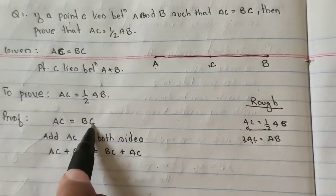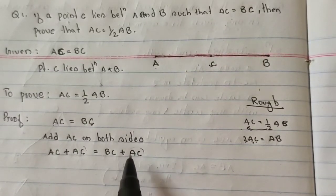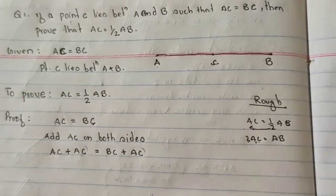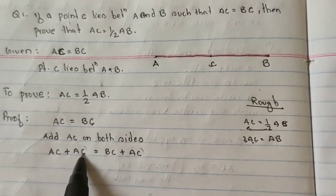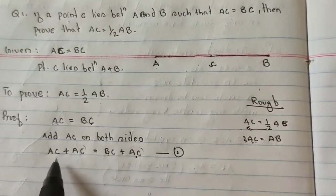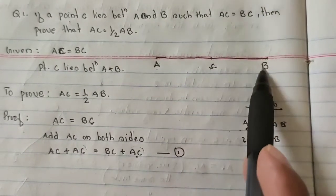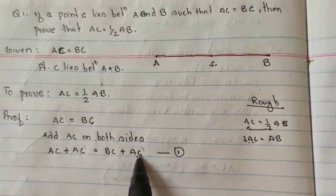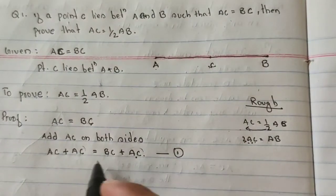So here I will get AC plus AC is equal to BC plus AC. These both are equal and I am adding equal quantities to equal quantities — you can say this is an axiom. So here I am adding AC on both sides, so I am getting AC plus AC here and BC plus AC here. Suppose this is my first equation.